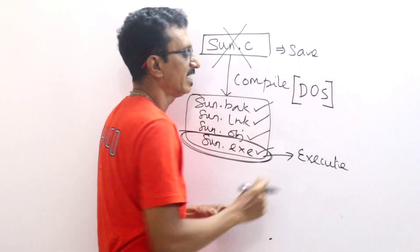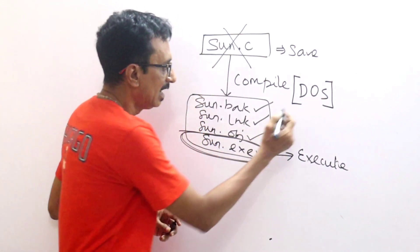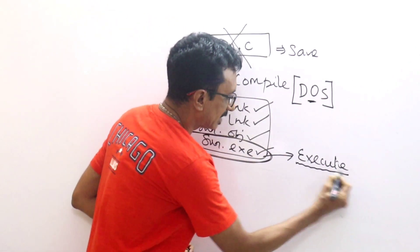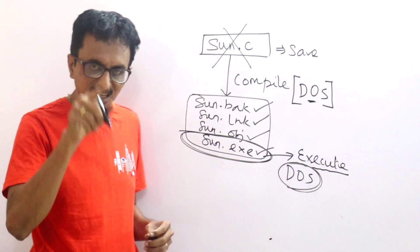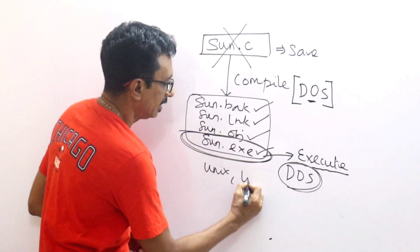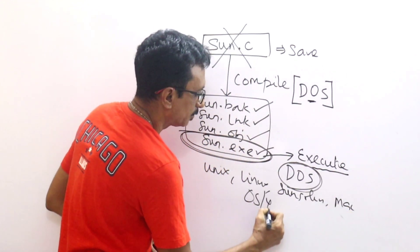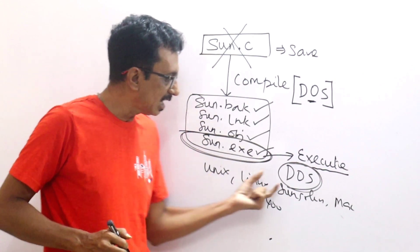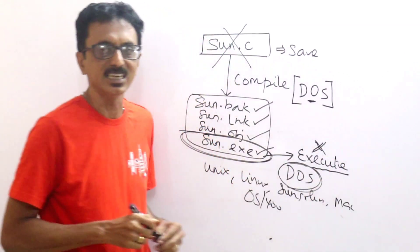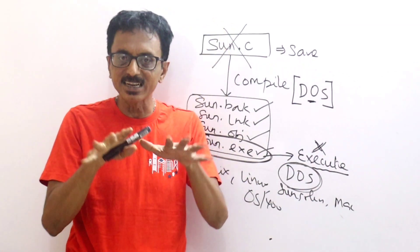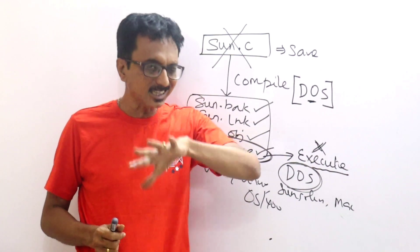Compile. DOS — that is Disk Operating System — one particular operating system is required in order to compile and execute. DOS is required in order to execute. That is C. Now, this is Java.